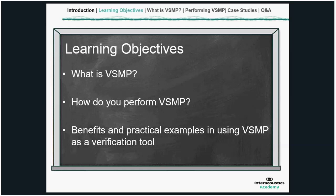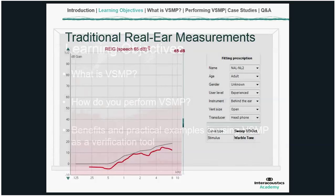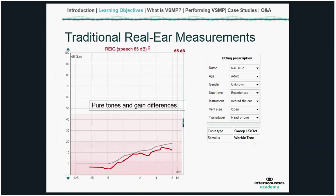Before we jump into what visible speech mapping is, I want to take a few minutes to look at why traditional real ear measurements have started to go out of favour and what the issues with them can be. Some of the problems we encounter with real ear measurements are to do with the type of stimuli we use. The gains achieved for real life signals such as speech or music can differ considerably from the gains measured with steady signals such as a warble tone, noises, or pure tones.